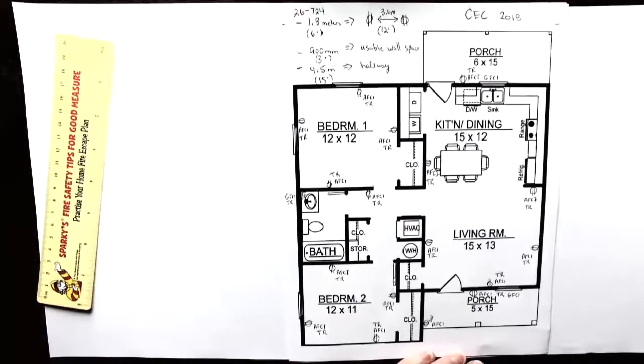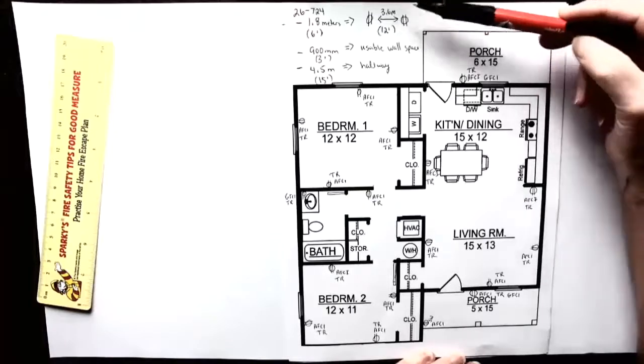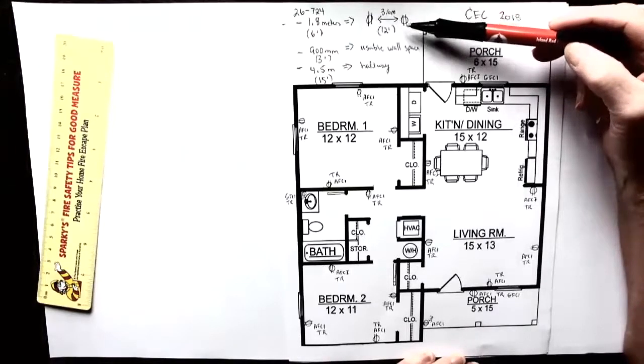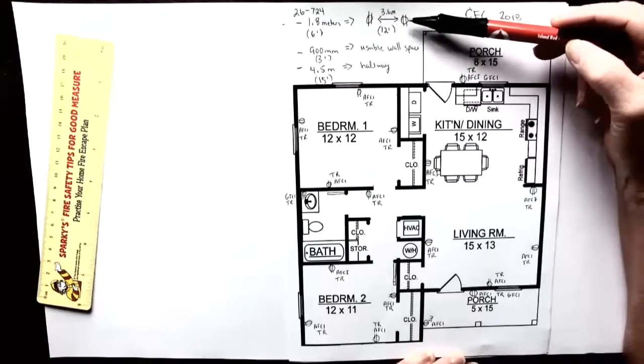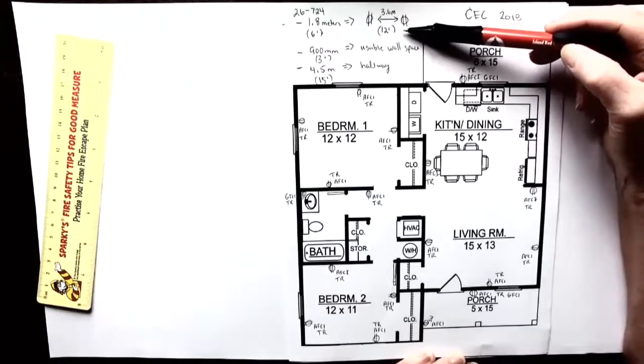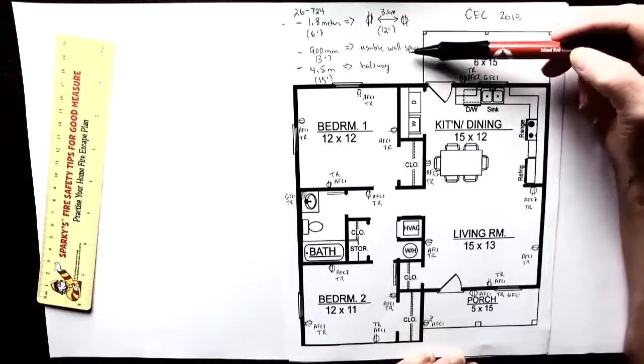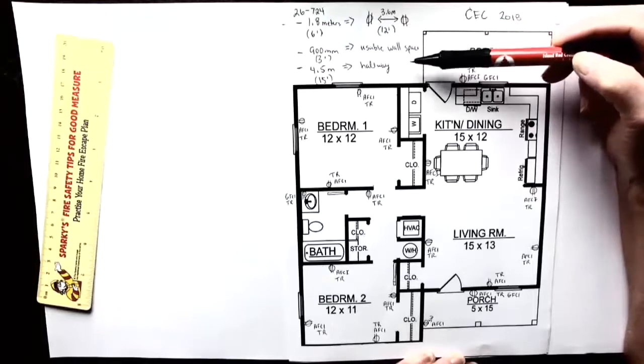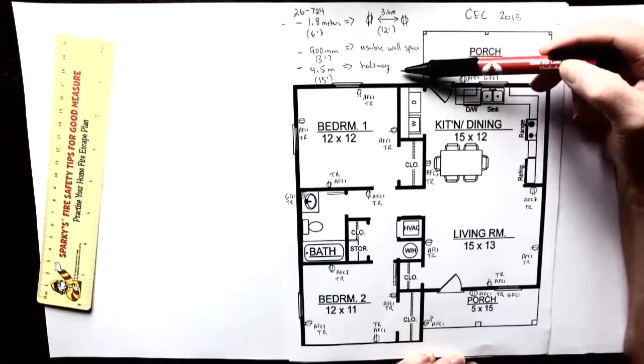If we just reviewed 26724, it says that no point along the wall can be more than 1.8 meters or six feet from a receptacle. That means that the two receptacles can be 3.6 meters apart or 12 feet apart. A usable wall space is considered anything that's 900 millimeters or more. And in a hallway, we need a receptacle, at least one receptacle so that no point along the wall is more than 4.5 meters from a receptacle.